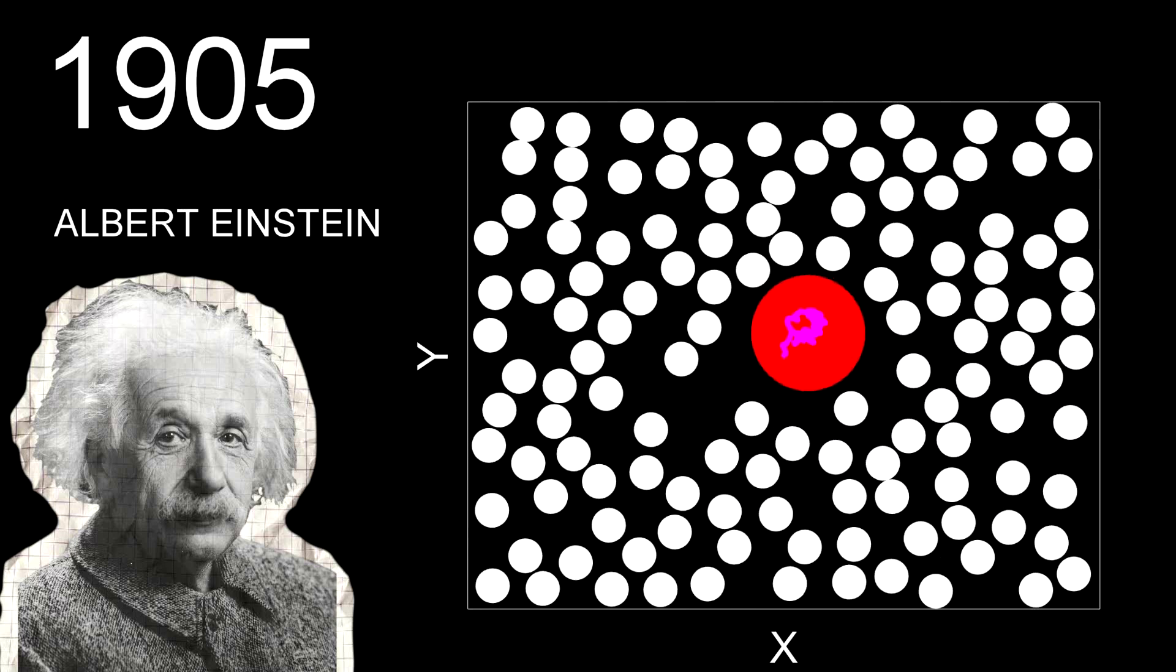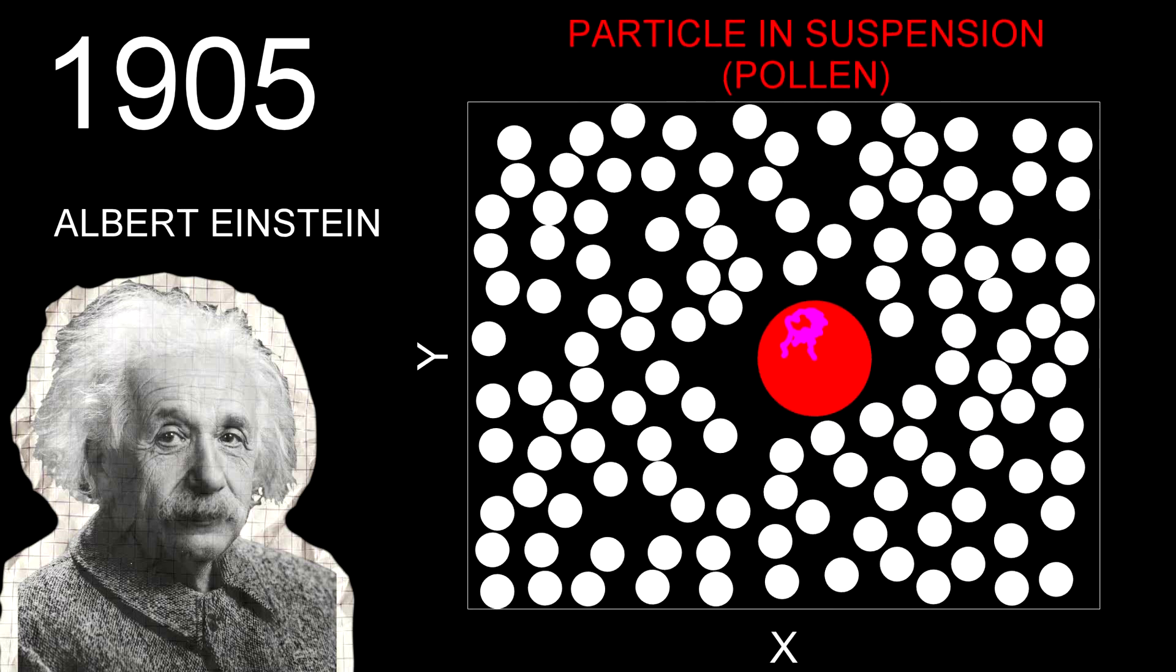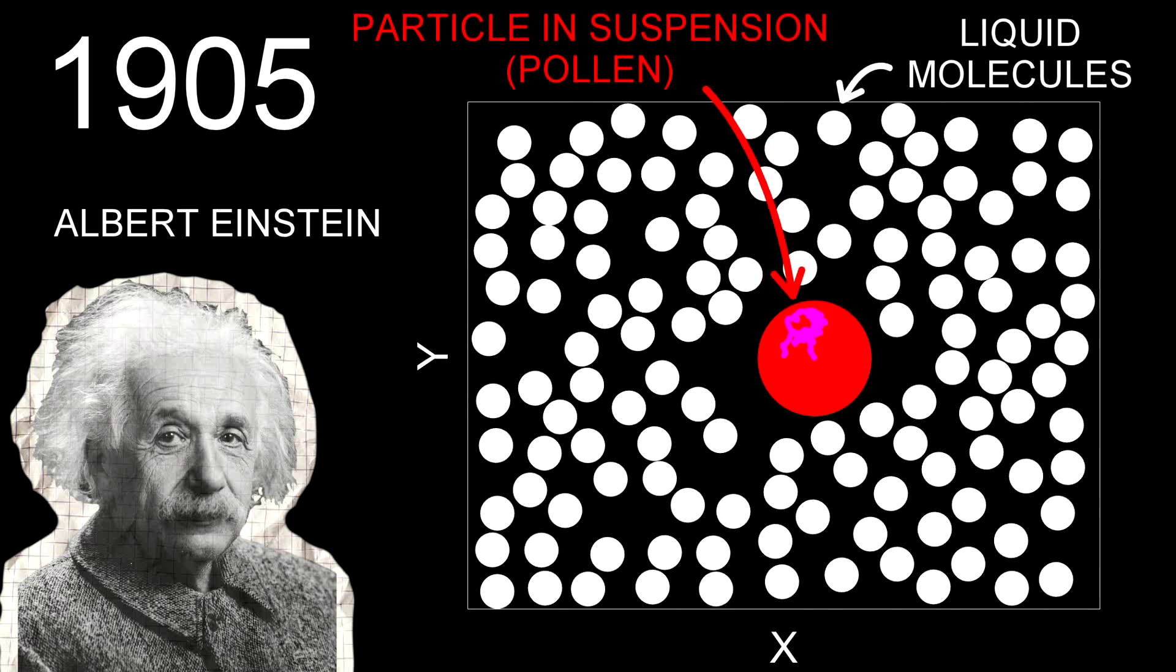He proposed that the random motion of the particles was caused by countless collisions with much smaller invisible molecules of the liquid.